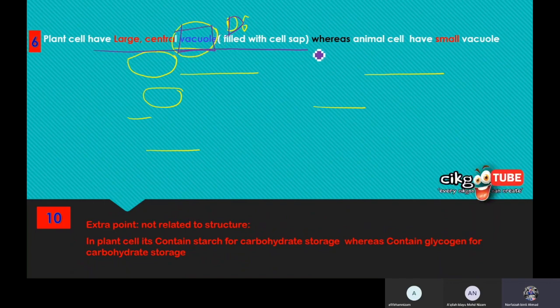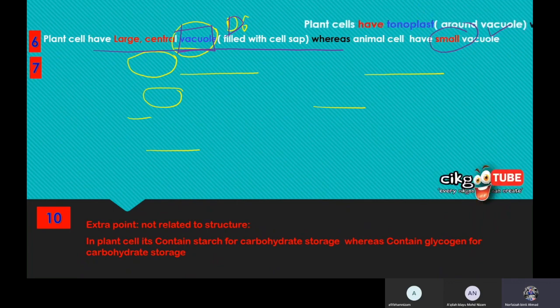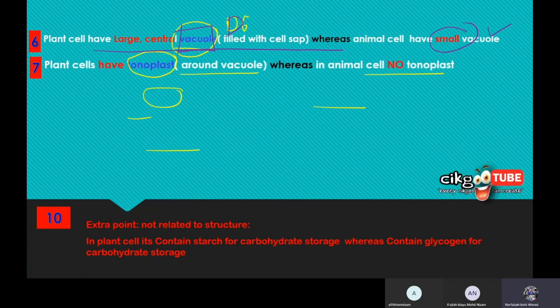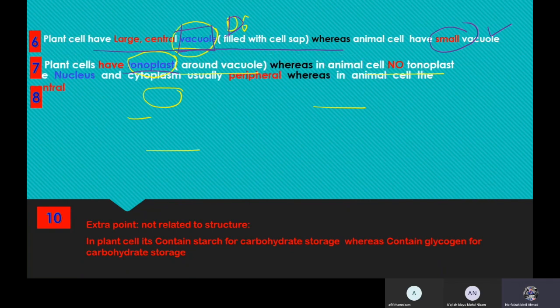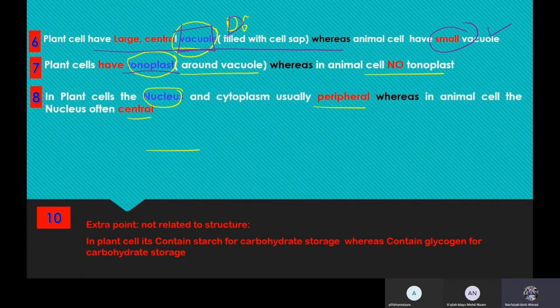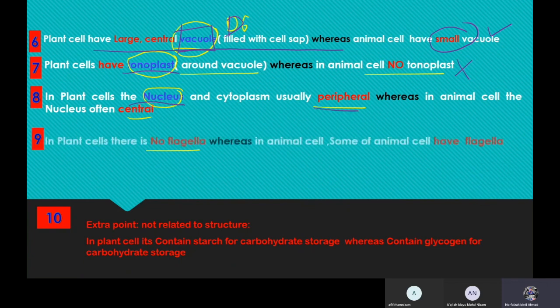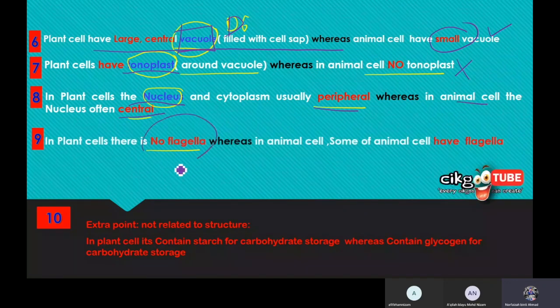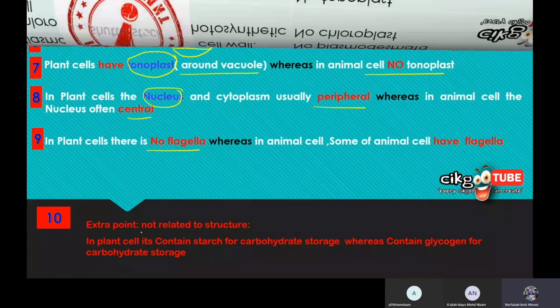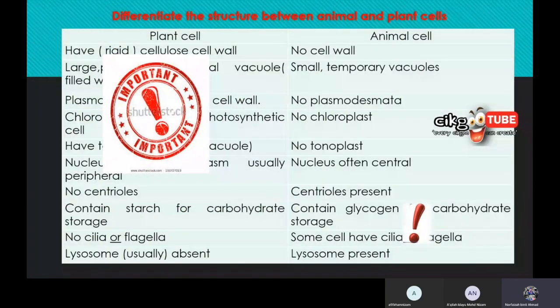When we mention about vacuole, we also mention about the tonoplast. Vacuole is surrounded by a tonoplast whereas there is no tonoplast in animal cell. Another: position of nucleus peripheral, and in animal cell is central. And last but not least is flagella. Animal cell have flagella. And extra point is about the starch for carbohydrate storage.